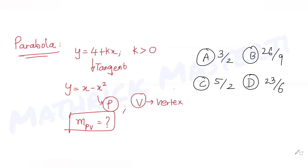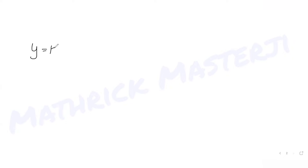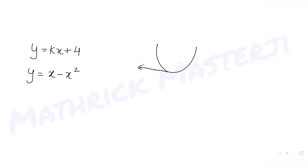Since the line y = kx + 4 is tangent to the parabola y = x minus x squared, both equations share exactly one intersection point. Because the left-hand sides are equal, we can equate the right-hand sides to find the point of intersection.